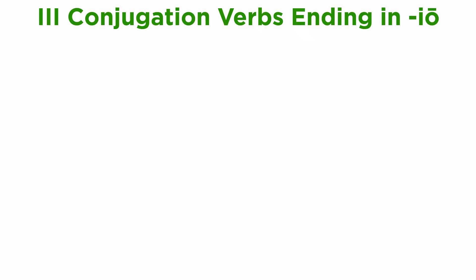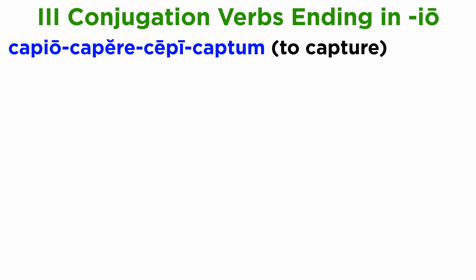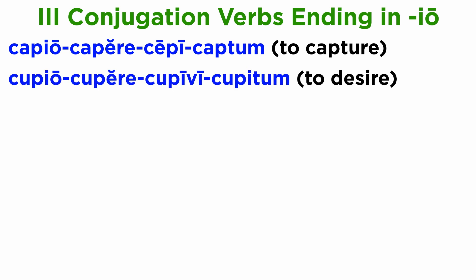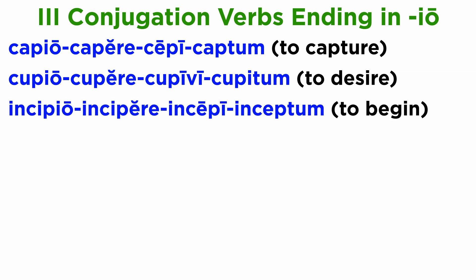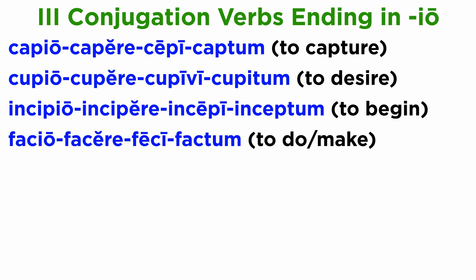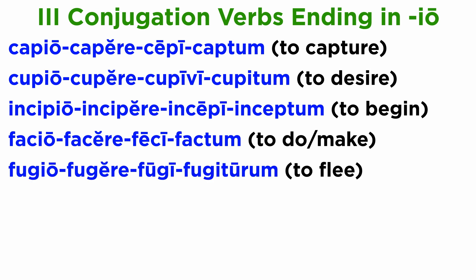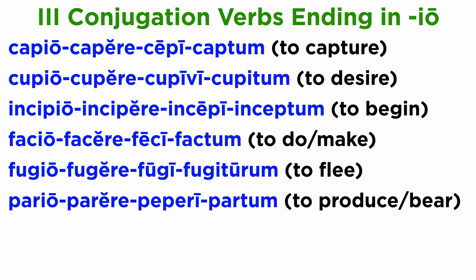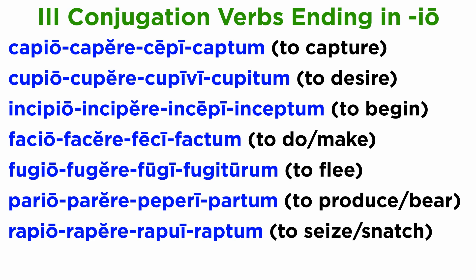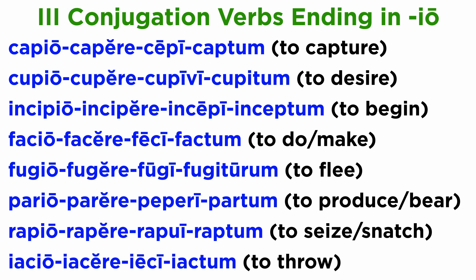Conjugating just like fugio are the following verbs: capio; incipio, incipere, incepi, inceptum; facio, facere, feci, factum; fugio, fugere, fugi, fugiturum; pario, parere, peperi, partum; rapio, rapere, rapui, raptum; iacio, iacere, ieci, iactum.